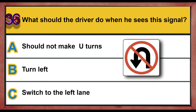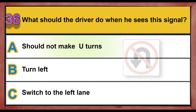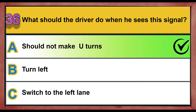Question 36. What should the driver do when he sees this signal? A. Should not make U-turns. B. Turn left. C. Switch to the left lane. Correct answer is A: Should not make U-turns.